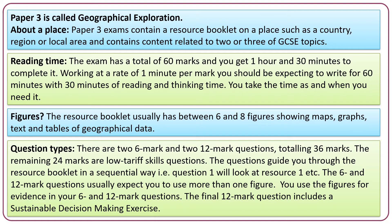The resource booklet usually has between six and nine figures, each showing a map, a graph, some text, or a table of geographical data. In a full paper 3 there are two 6 mark and two 12 mark questions totalling 36 marks, with the remaining 24 marks being low tariff skills questions. The questions guide you through the resource booklet sequentially — question 1 looks at resources 1 and 2, question 2 at resources 2 and 3, and so on. The 6 and 12 mark questions usually expect you to use more than one figure, and the final 12 mark question includes a sustainable decision-making exercise.